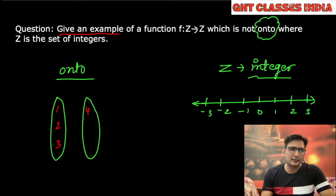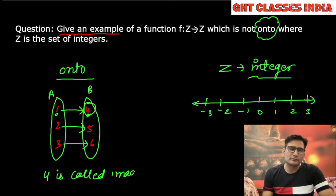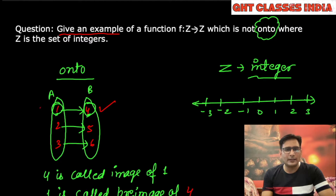Suppose there are three elements in set A and three elements in set B. Suppose this element has a relation with this one, two has a relation with this one, and six has a relation with this one. Now, this element 1 maps to 4. So 4 is called the image of 1, and 1 is called the pre-image of 4. So we must understand these two words: image and pre-image.